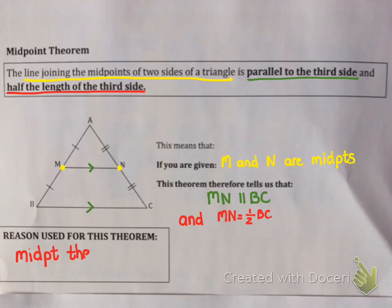Now if you ever need to use this theorem in a question, your reason used when you use this logic is the midpoint theorem. So just to go over this again, if you're given two midpoints, the line joining the midpoints is parallel and half of the third side of the triangle.